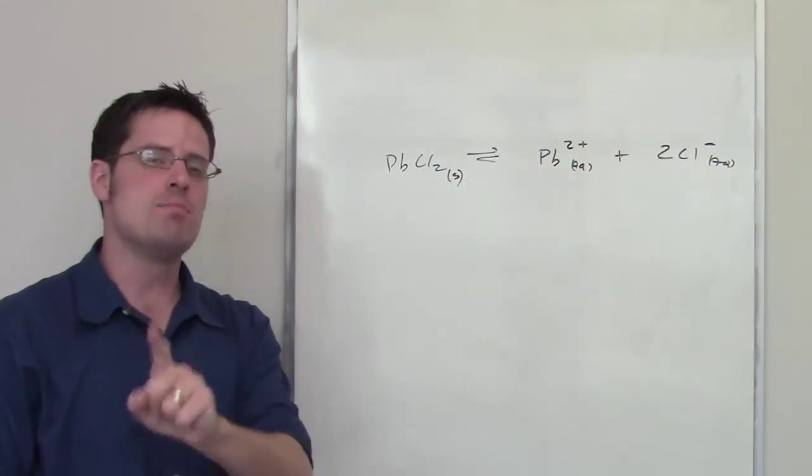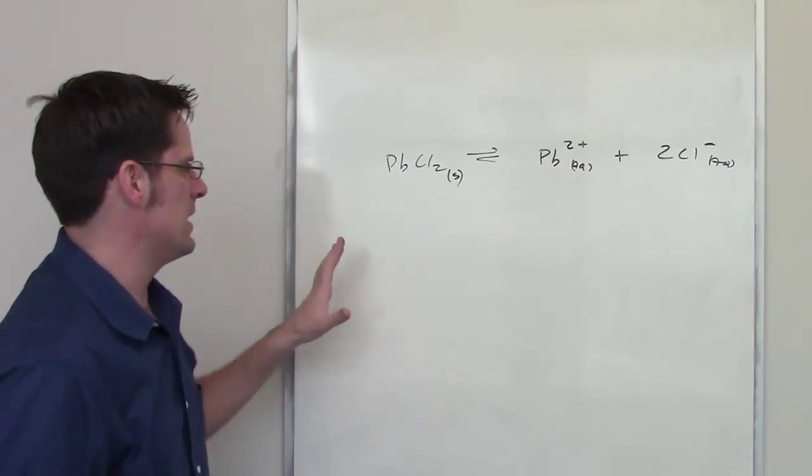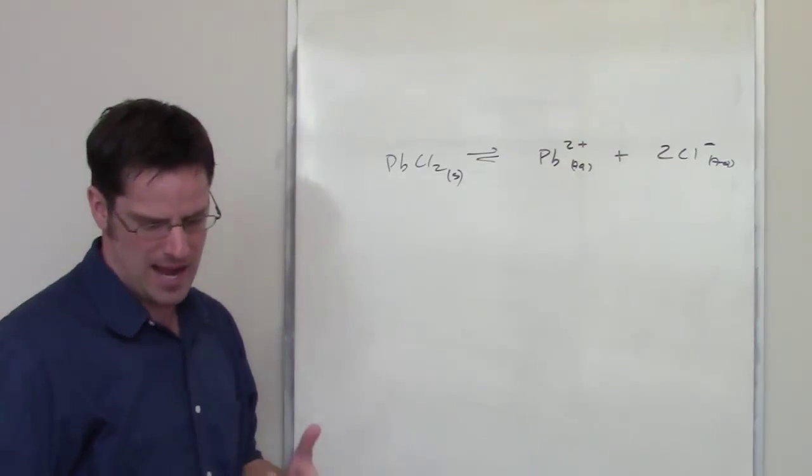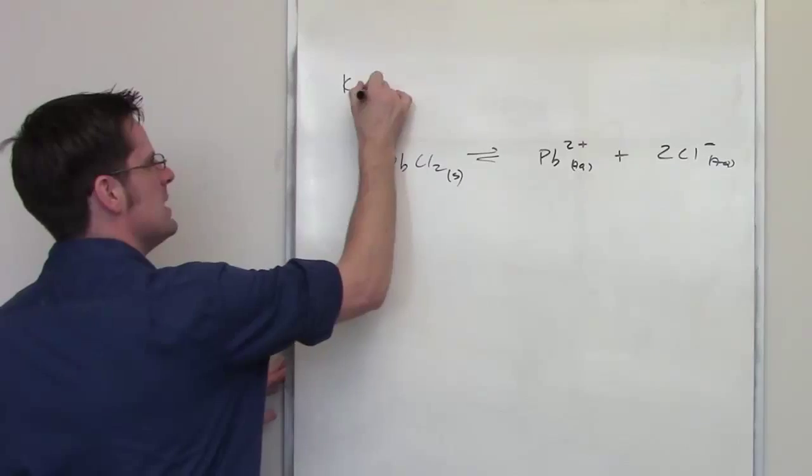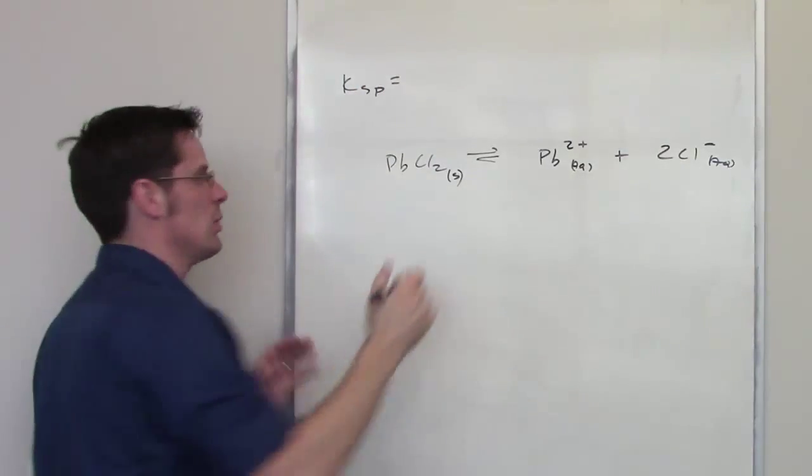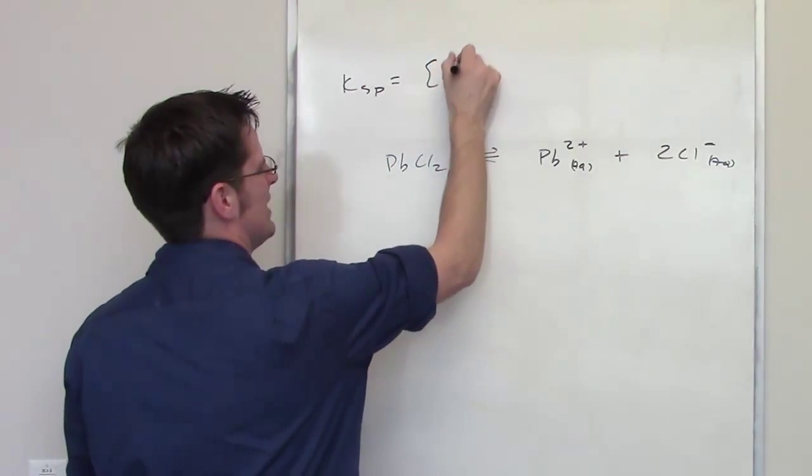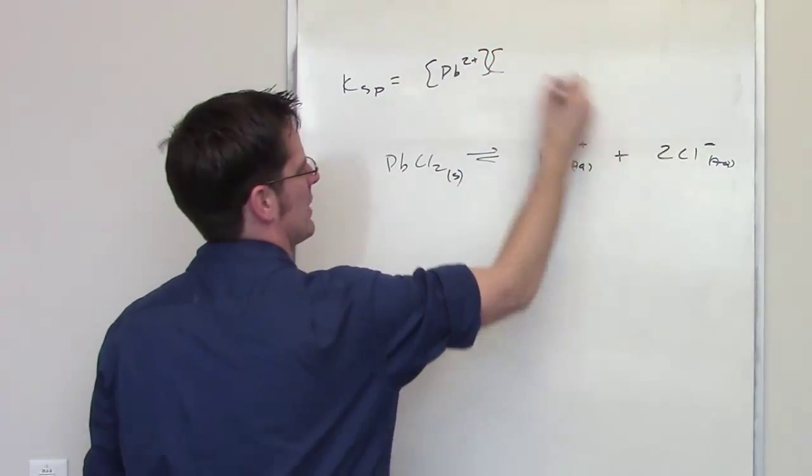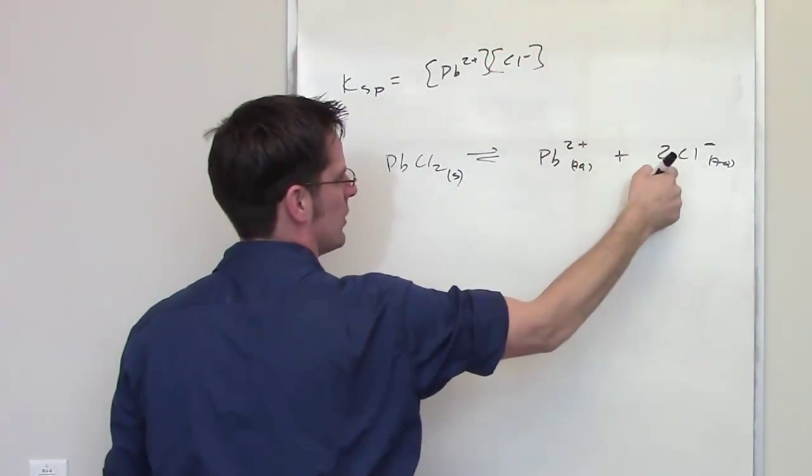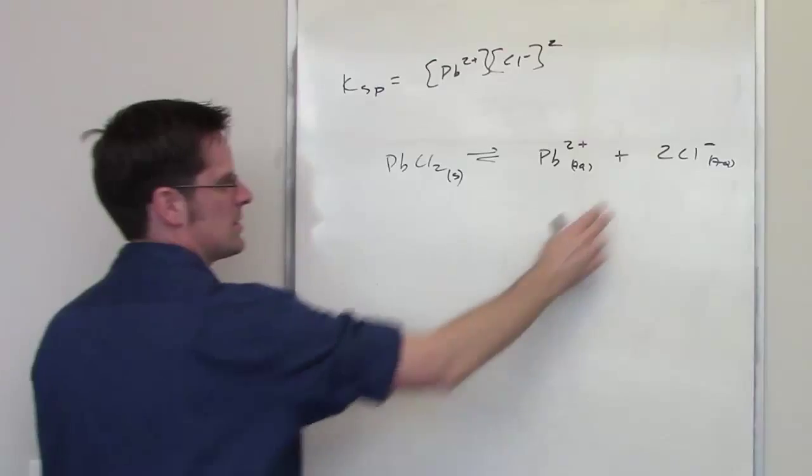It tells me the molar solubility of this. Now that's interesting. And then it asks me to calculate Ksp. Ksp is of course expression-wise is going to be equal to the concentration of lead 2+ multiplied by the concentration of chloride minus squared. So I get the squared from this 2.